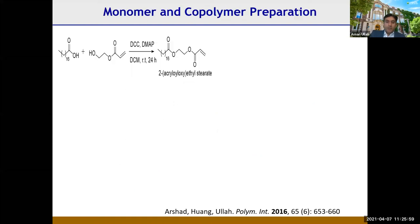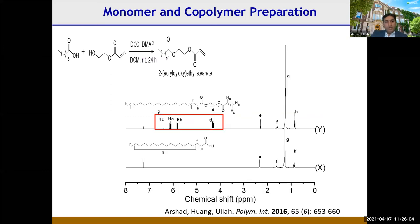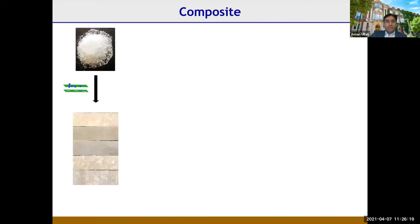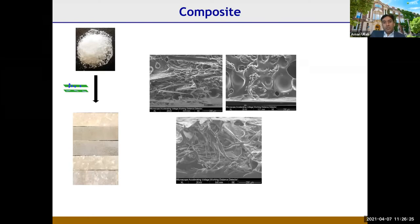We took the saturated fatty acid monomer, functionalized it, and co-polymerized it with styrene to make a polymer, then reinforced it with the modified feather fibers to make composites. SEM of the composites shows that the modified fibers do not pull out during mechanical testing — they actually break down — whereas unmodified fibers are pulled out.